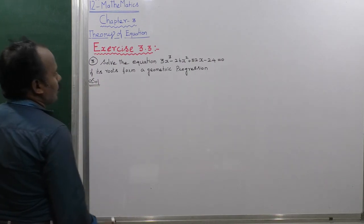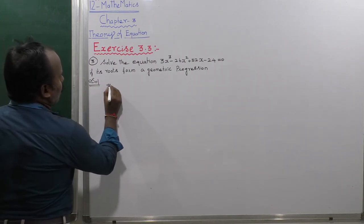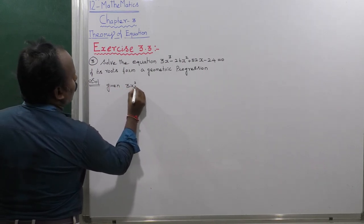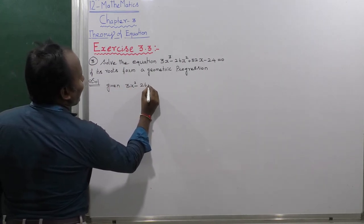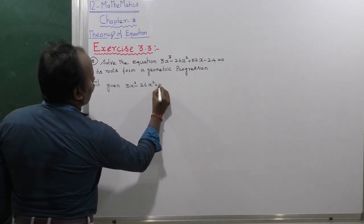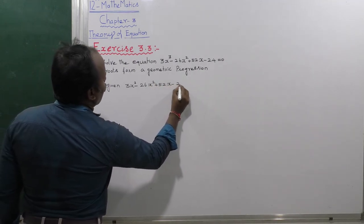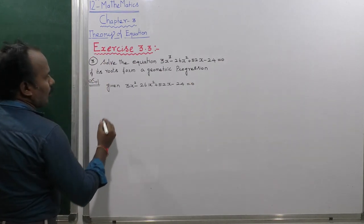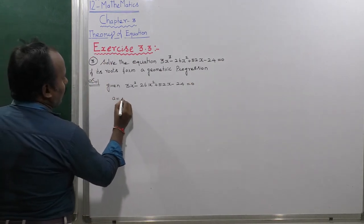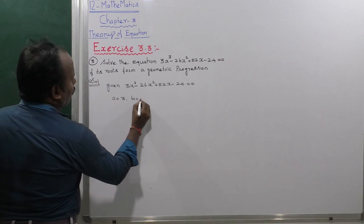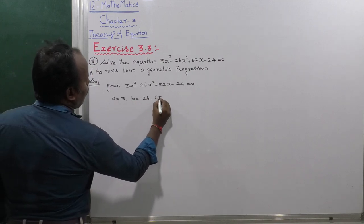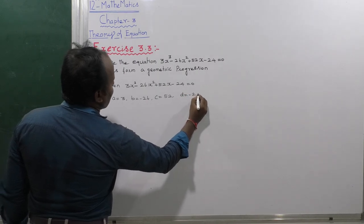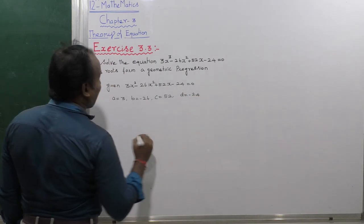First of all, the given equation is 3x cubed minus 26x squared plus 52x minus 24 equals 0. The coefficients are: A equals 3, B equals minus 26, C equals 52, D equals minus 24. Those are the given values.